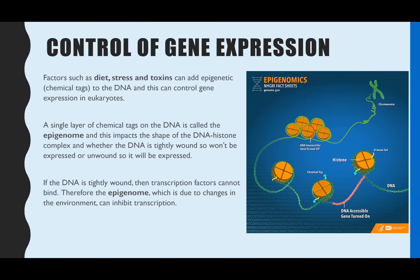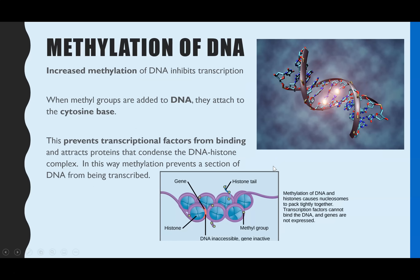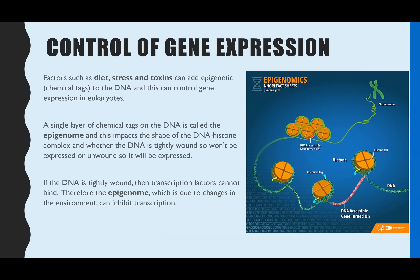The epigenome has no impact on the DNA base sequence. All it does is affect the overall shape of the DNA — whether the DNA is tightly coiled or unraveled. Tightly coiled DNA is called heterochromatin. The less tightly coiled DNA, where genes are accessible to be transcribed, is called chromatin.